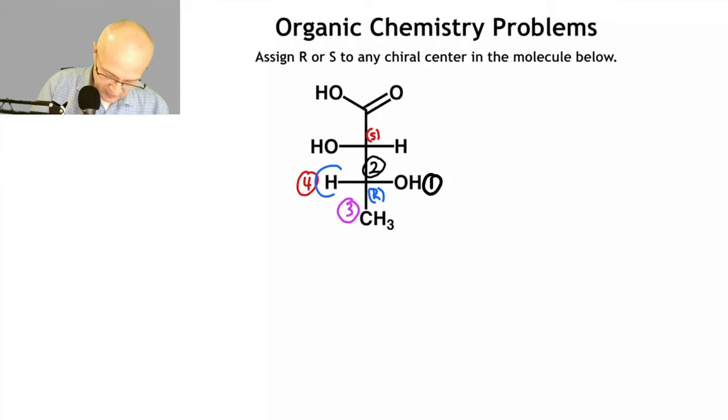Because remember, this hydrogen, the low priority group, is pointing towards you, meaning it's the opposite of what you think. So this chiral center is S, and this chiral center is R.